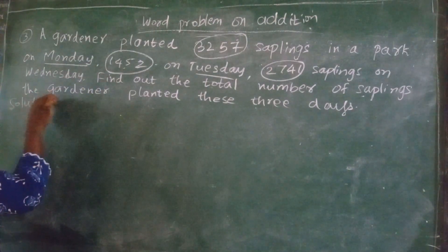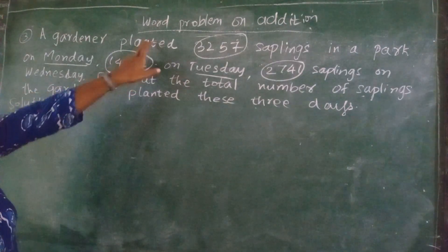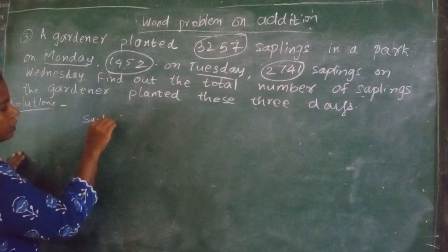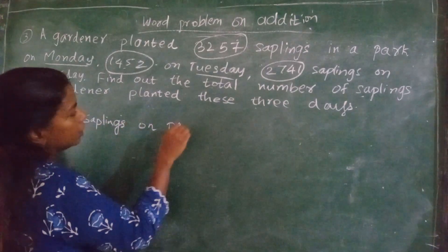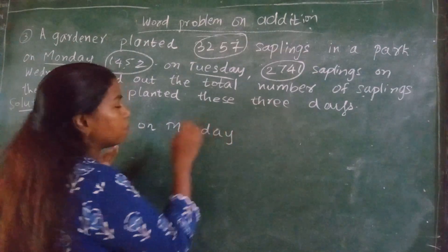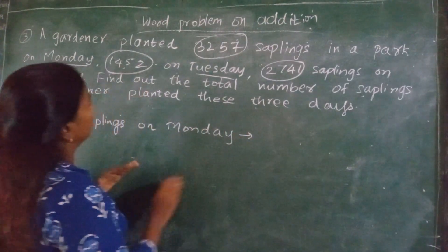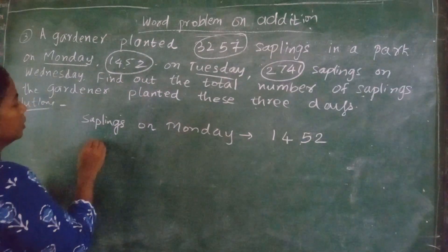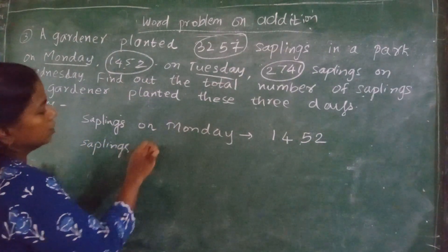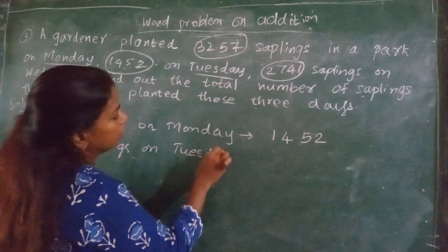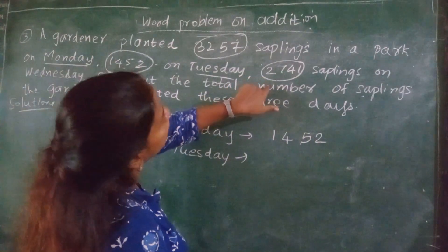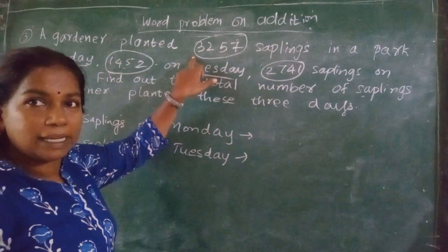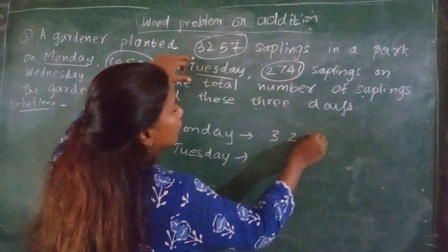Solution. What did he do? He planted — how many and when? Saplings on Monday — you can write 'saplings planted on Monday,' that is also correct. Saplings on Monday: 3,257. Sorry, I made a mistake — on Monday it is 3,257. Hope you wrote correctly.